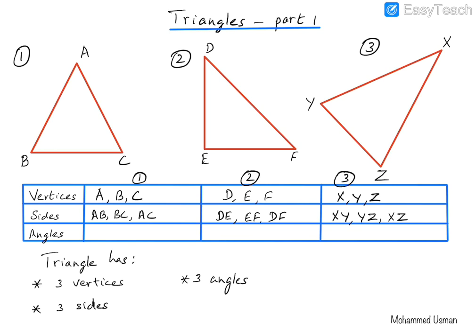Finally, the triangle also has three angles. For triangle number one, the first angle is angle A, which we can write as angle BAC. The second angle is angle B and the third angle is angle C. So for the first triangle, we have angle A, angle B and angle C.